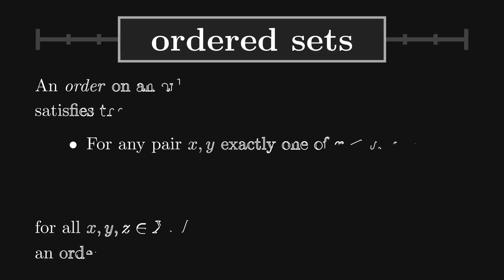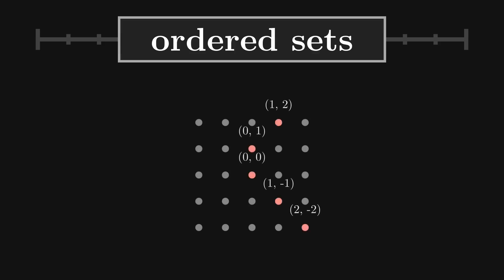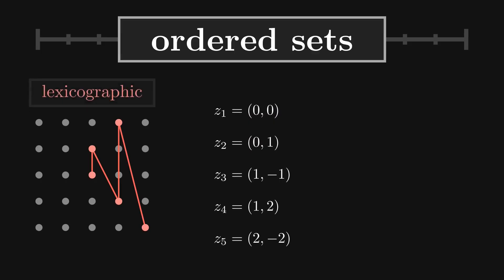The real numbers with their usual order is a classic example. There are others, such as the dictionary order, which can be used to compare words. Think of it as the way we organize words in a dictionary.